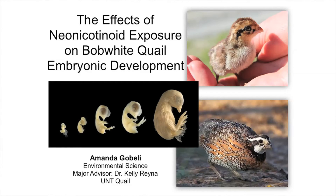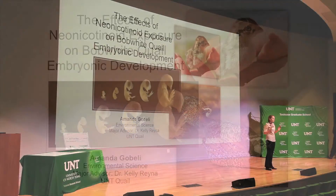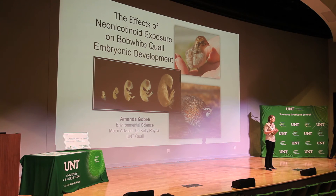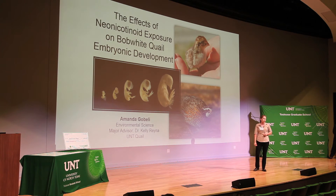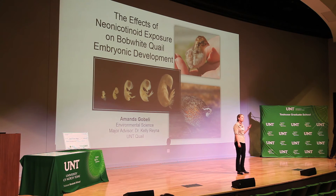To investigate my objectives, I injected bobwhite eggs with five concentrations of a neonicotinoid insecticide during five periods of development, for a total of 25 treatments. Near the end of incubation my embryos were euthanized and then examined. I measured the mass of the embryo itself as well as the mass of the heart, the liver, the lungs, and the kidneys, and I also took note of any deformities.